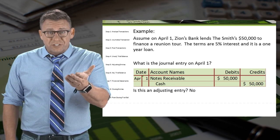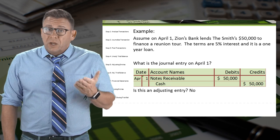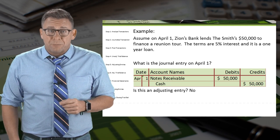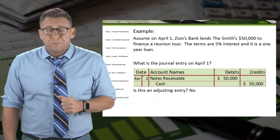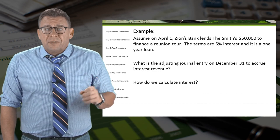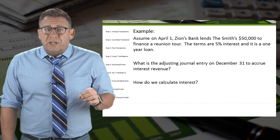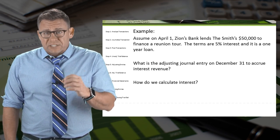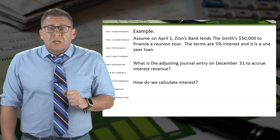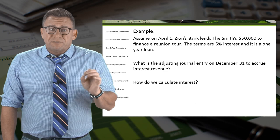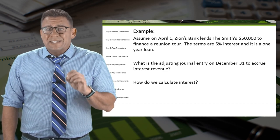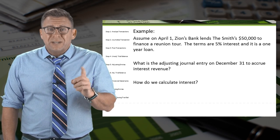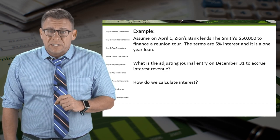Is this an adjusting entry? No, because there's an underlying event that happened on April 1st. The adjusting entry needs to be recorded at the end of the year. So, as of December 31st, what has Zions Bank earned but not yet collected?